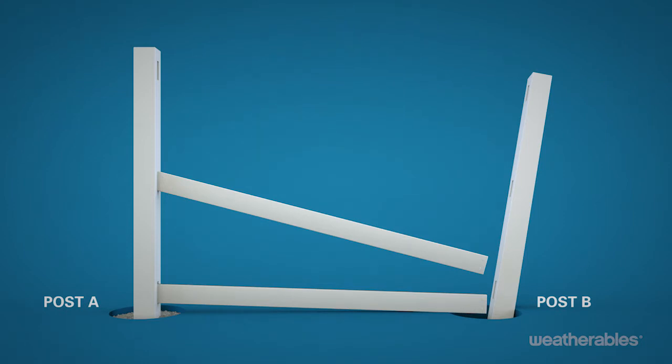Now it's time to insert the pickets. We recommend resting the bottom rail on a 2 by 4 to keep it a level 2 inches off the ground to make it easier to insert the pickets.